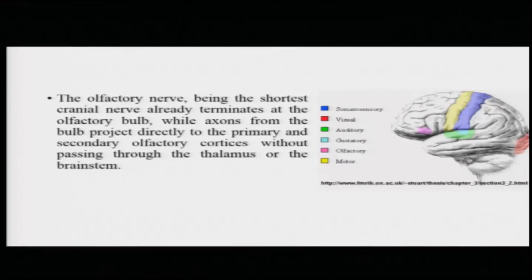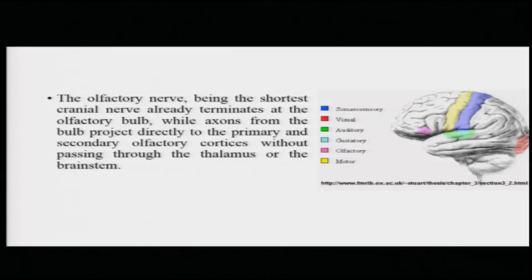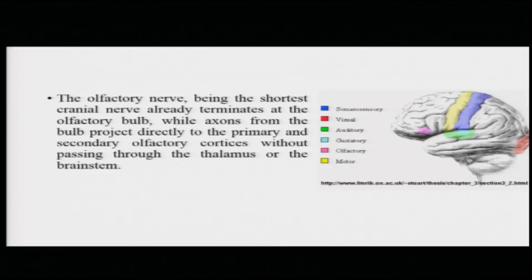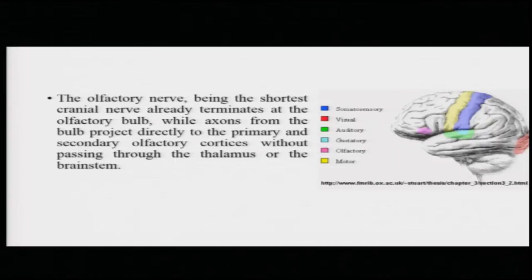The olfactory nerve, being the shortest cranial nerve, already terminates at around the olfactory bulb, while the axons from this olfactory bulb project directly to the primary and secondary olfactory cortices without passing through the thalamus or the brain stem. So olfaction is slightly unique in the sense that information from the olfactory nerve does not pass through the thalamus but directly connects to the primary and secondary olfactory cortices.